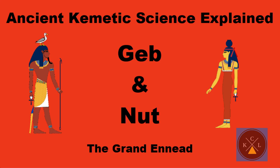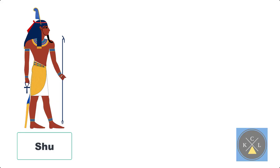Kemetic science. Geb and Nut explained. Geb and Nut are the last two of the four foundational metaphysical elements that produce physical life. Those four foundational elements are Shu, Tefnut, Geb, and Nut.